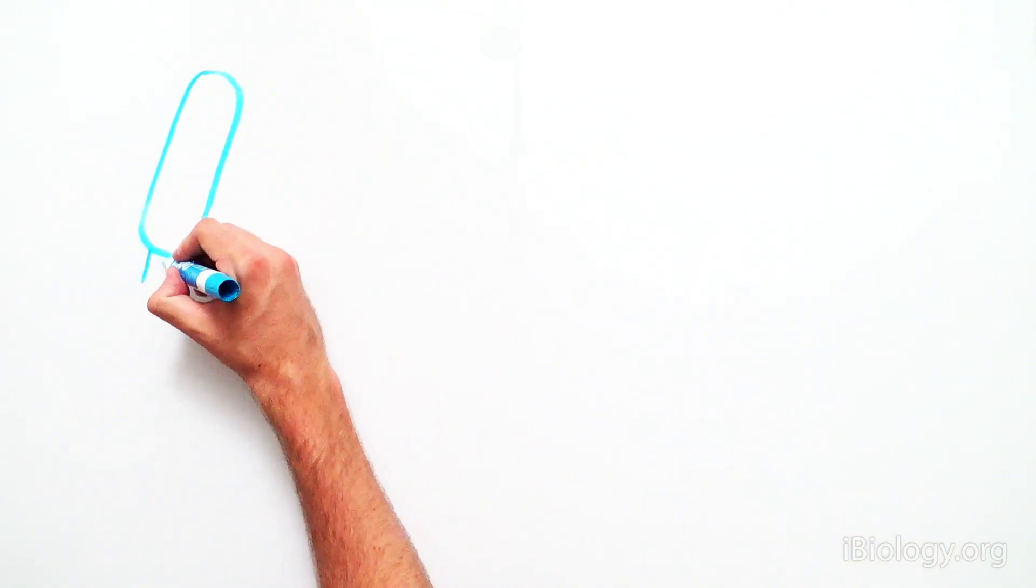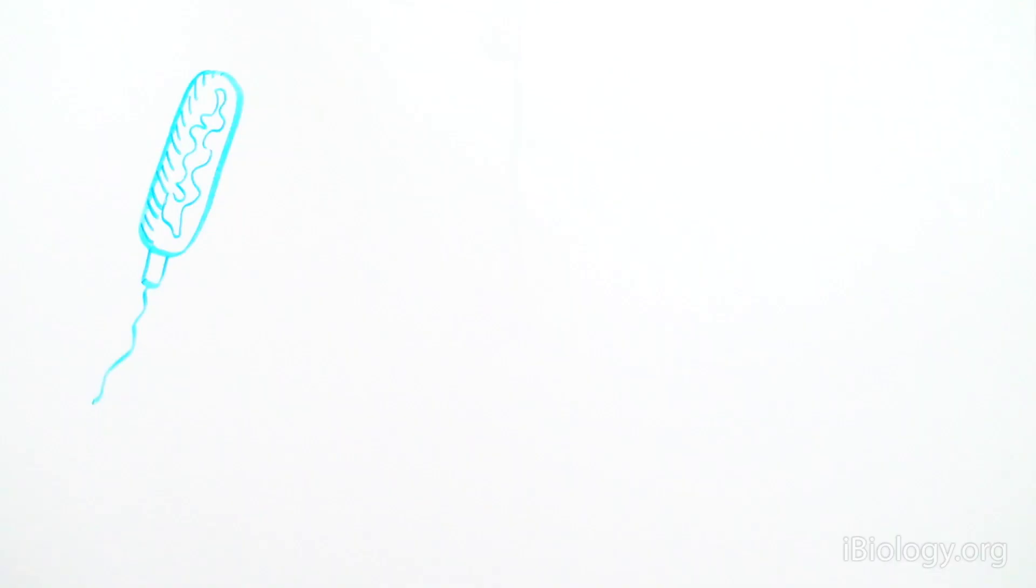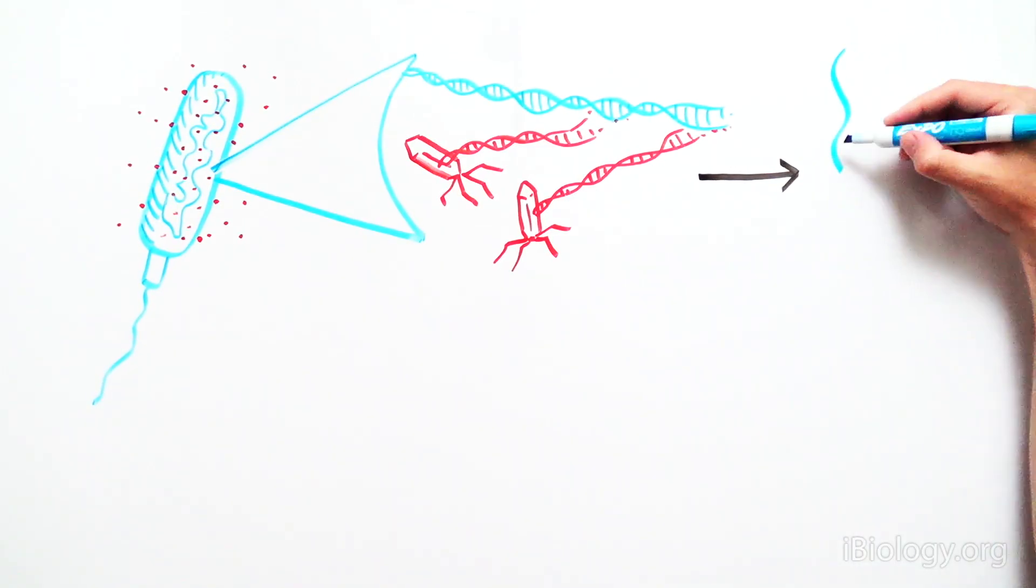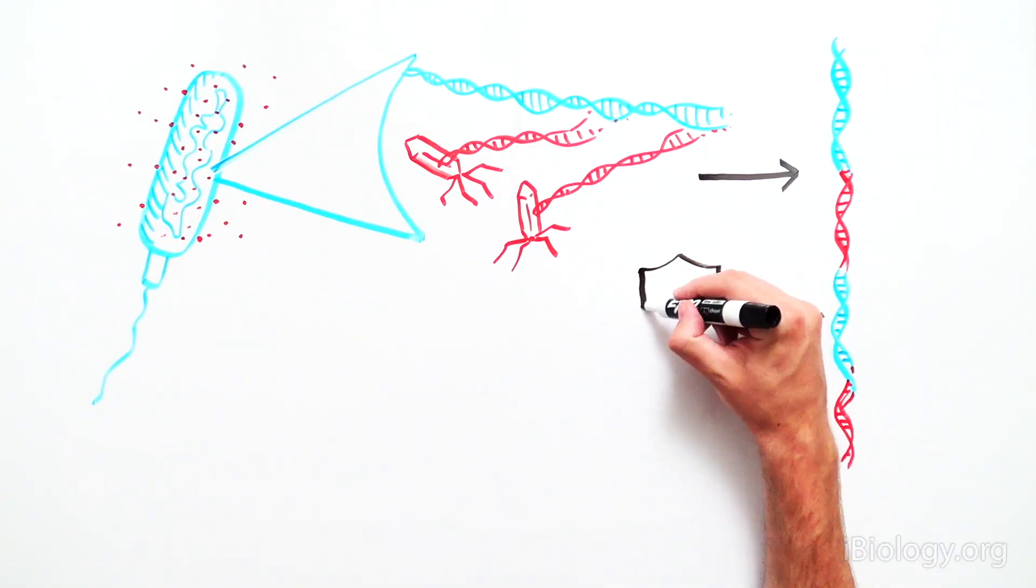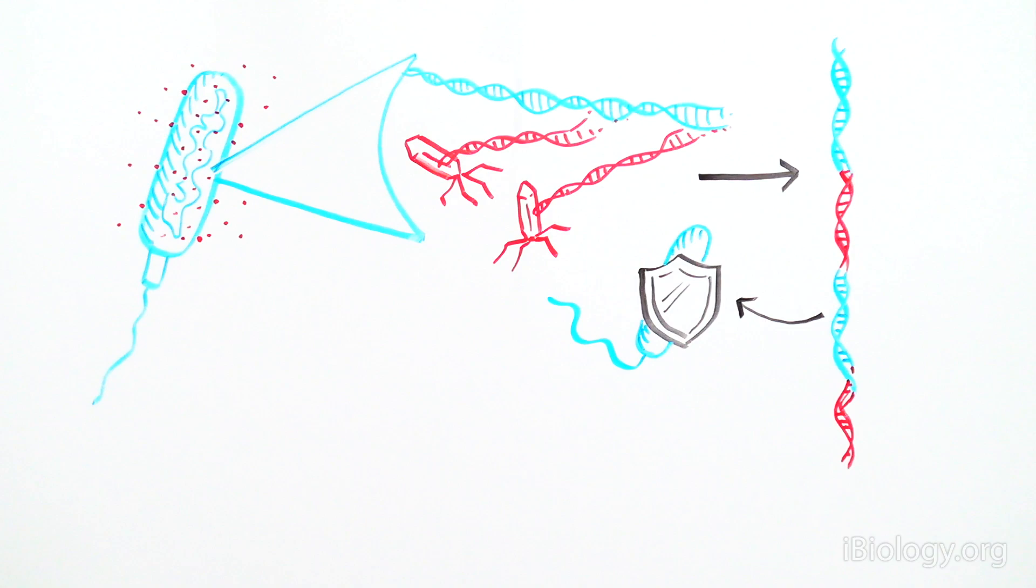Up until a few years ago, what was known about the CRISPR-Cas system is that bacteria infected by a virus incorporate elements of the virus's DNA into the CRISPR sequence. This protected the bacteria from future infection by this virus.